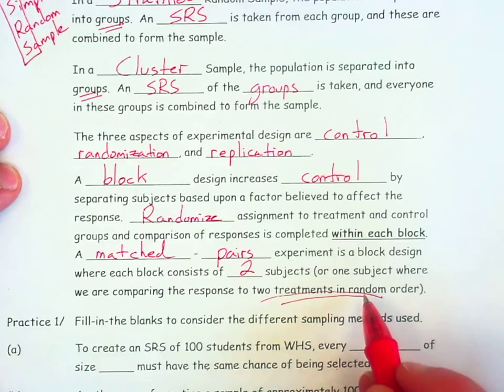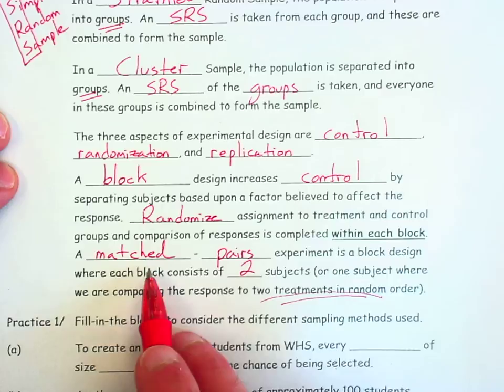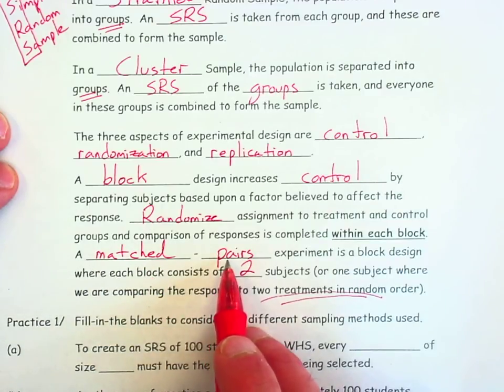This could also be, for instance, like a before and after comparison, maybe a pre and post-test type of study where each subject takes a pretest, goes through some sort of training or treatment, and then we take a post-test and we look at the differences between the pre and the post-test. We make that comparison for each subject. So again, matched pairs is just a special type of blocking.